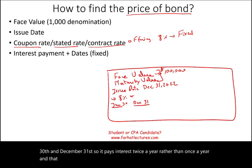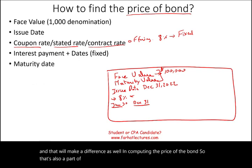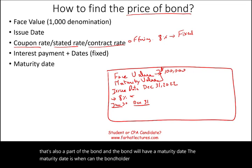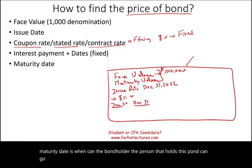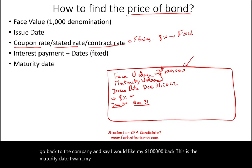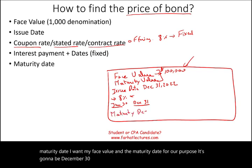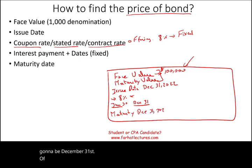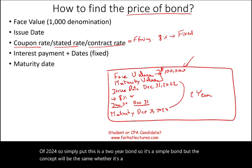The bond also has a maturity date — when the bondholder can go back to the company and say, 'I would like my $100,000 back.' The maturity date for our purposes is December 31st, 2024, making this a two-year bond. The concept will be the same whether it's a two-year bond, a 20-year bond, or a 30-year bond.